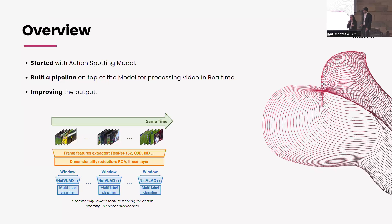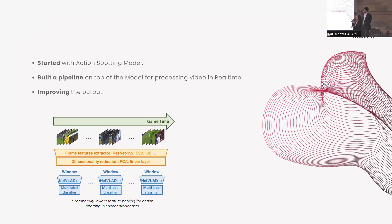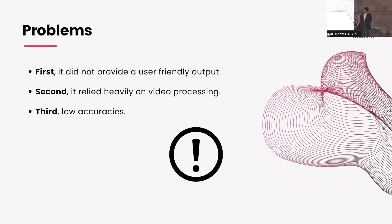We started researching a new approach to generate the highlights and adopted new models for higher accuracy, but then we decided not to continue with this approach because we found that the action-spotting model had some issues. First, it didn't provide us with the user-friendly output we desired. It relied heavily on video processing, which caused large delays and lower accuracies. And for seeking higher accuracy, the more complex models caused delays and were very expensive in terms of performance and resources.